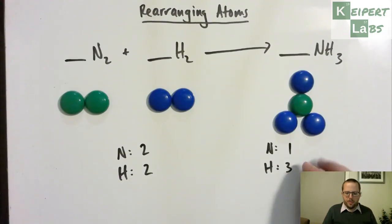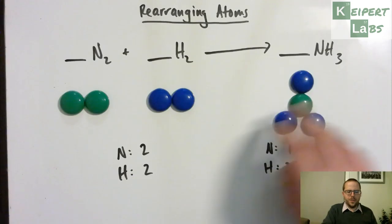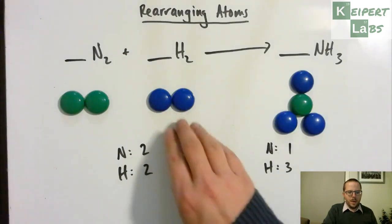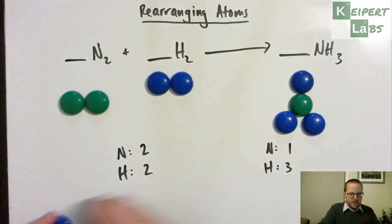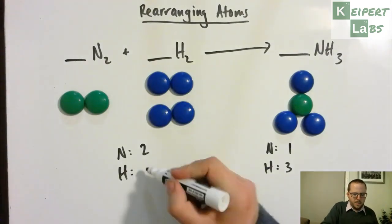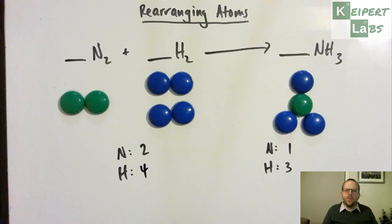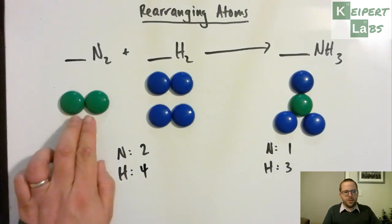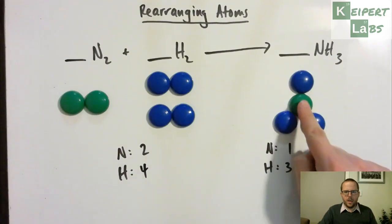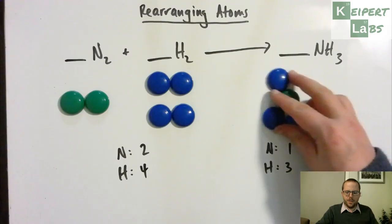But I know that at very least, I've got more hydrogens on this side than I do on this side at the moment. So perhaps what I can do is I can add in a second molecule over here. That takes me up to four. So in that sense, I haven't really fixed the problem. I've now overcompensated.